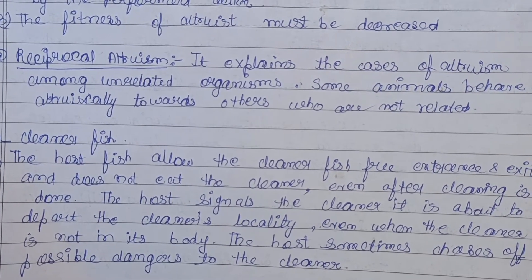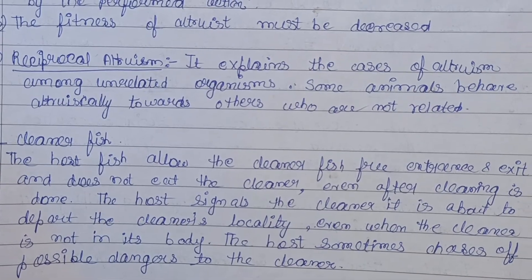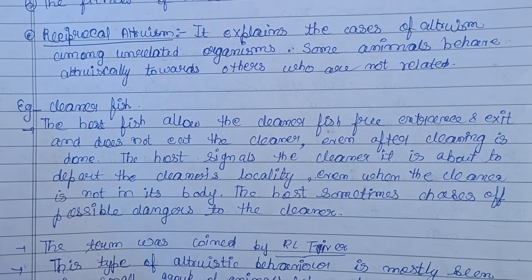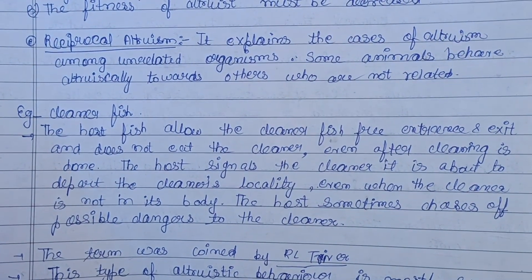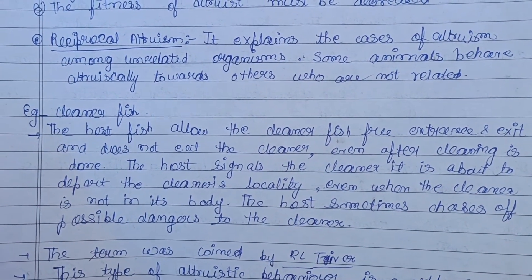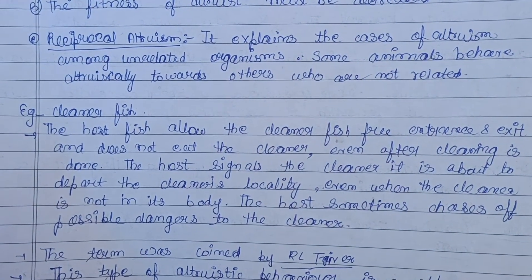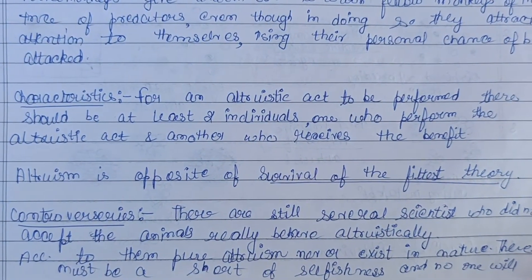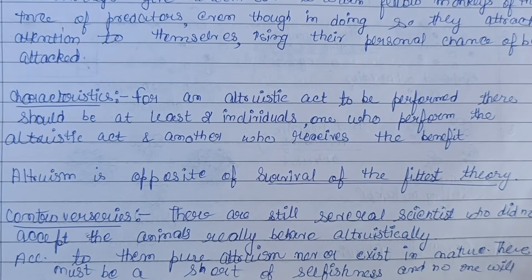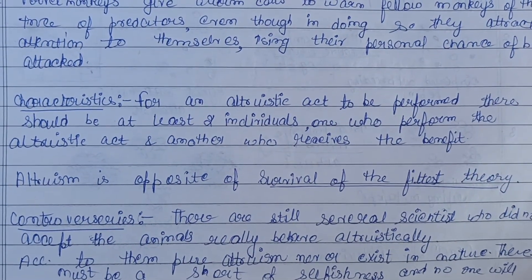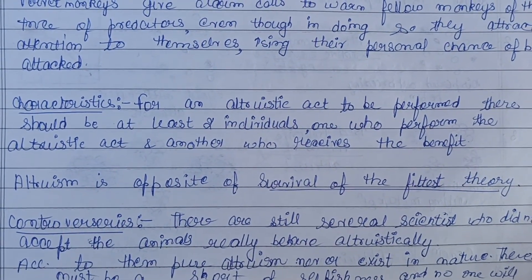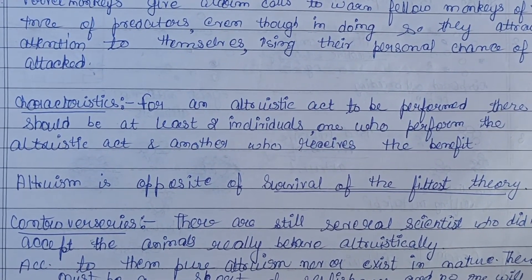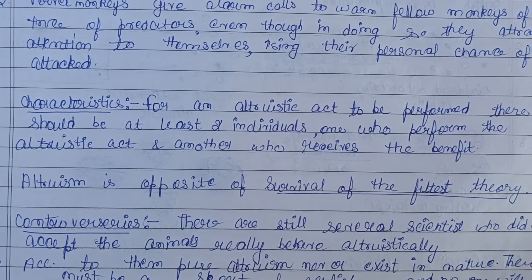This is an example of reciprocal altruism, a term coined by Robert Trivers. Another characteristic of an altruistic act is that there should be at least two individuals: one who performs the act — the actor — and one who receives the benefit from the actor — the recipient. We can say altruism is the opposite of the survival of the fittest theory.